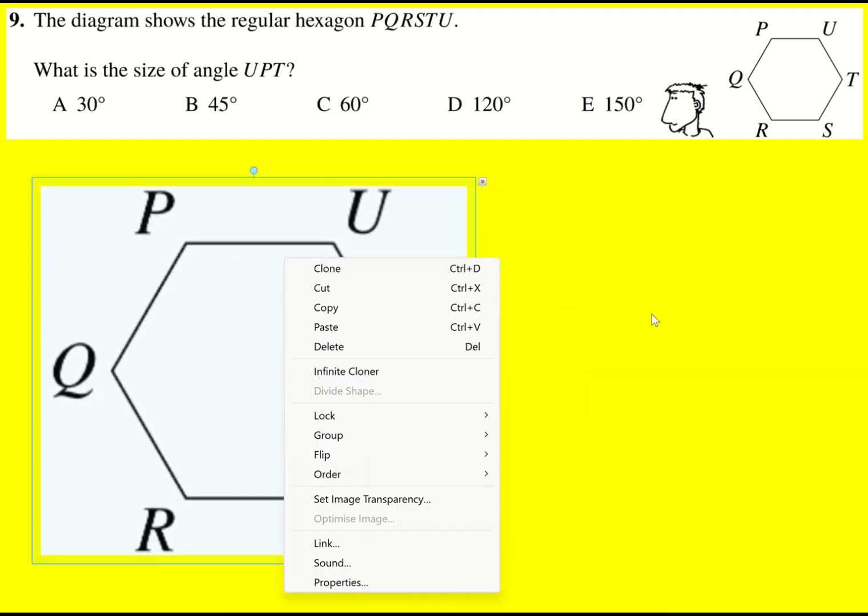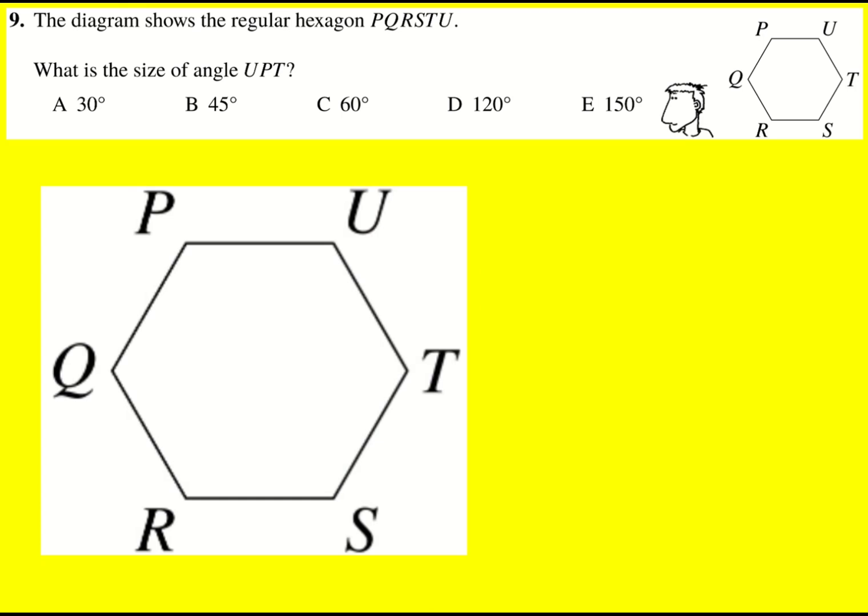We have this regular hexagon and we're asked to find the size of angle UPT. So we start at U, we go to P, and then to T. It's the angle that's kind of created from that. It's generally the smaller acute angle. It's that one there.